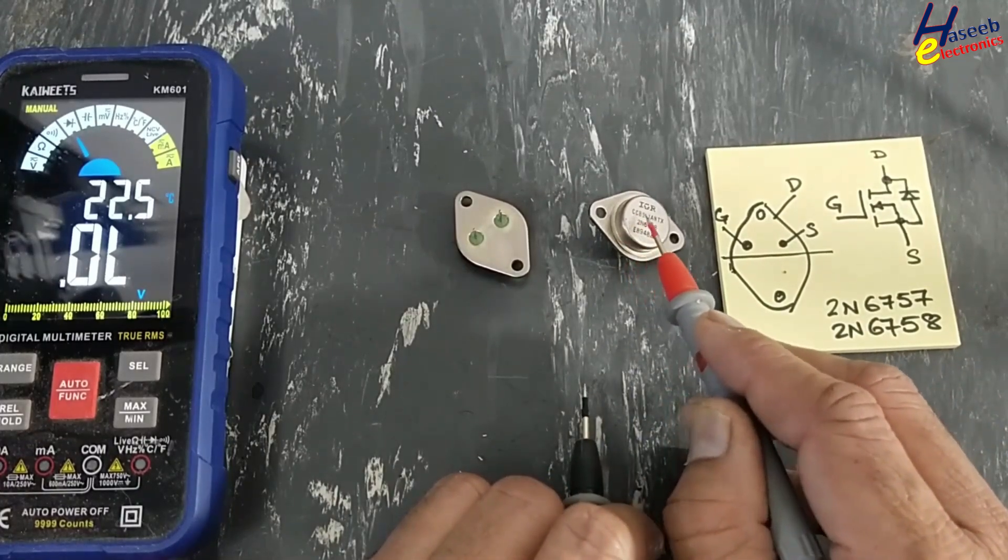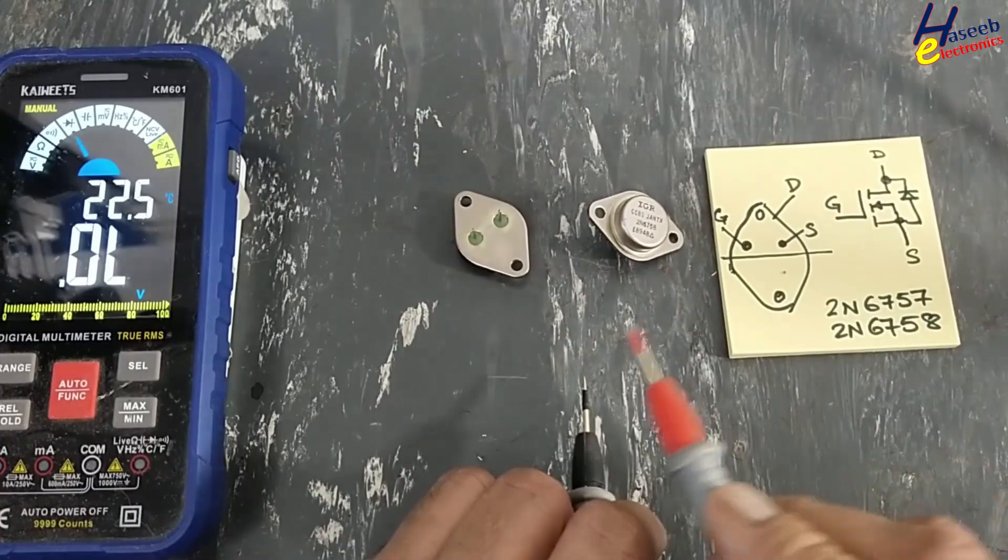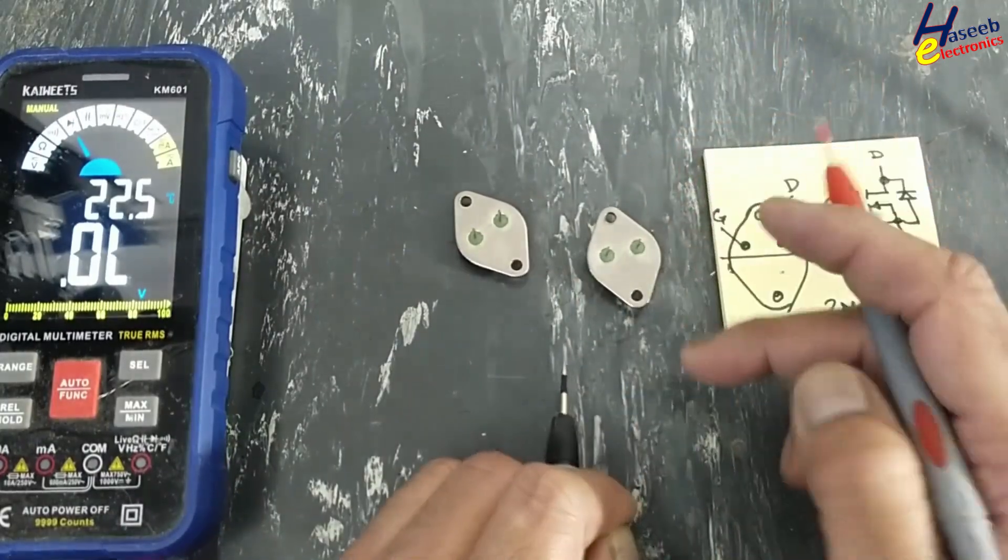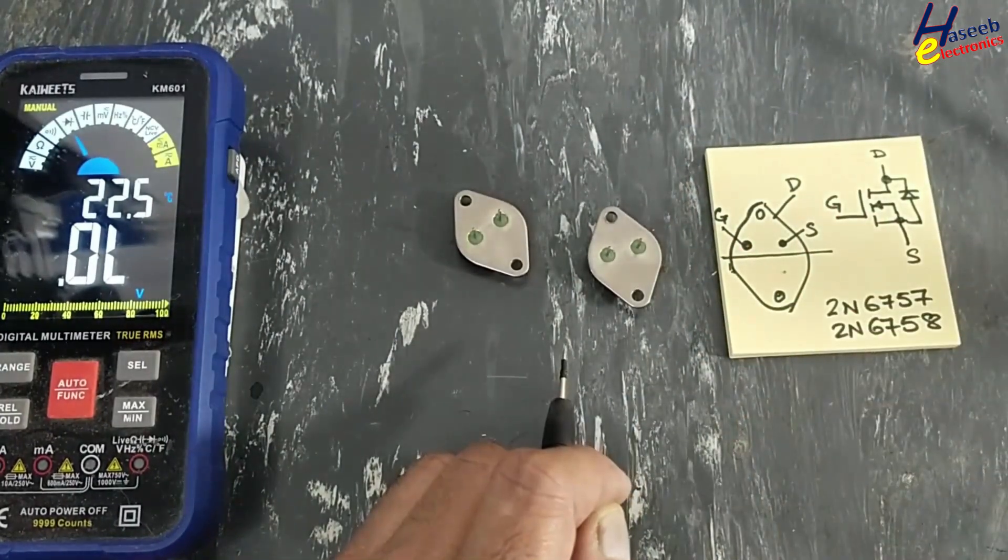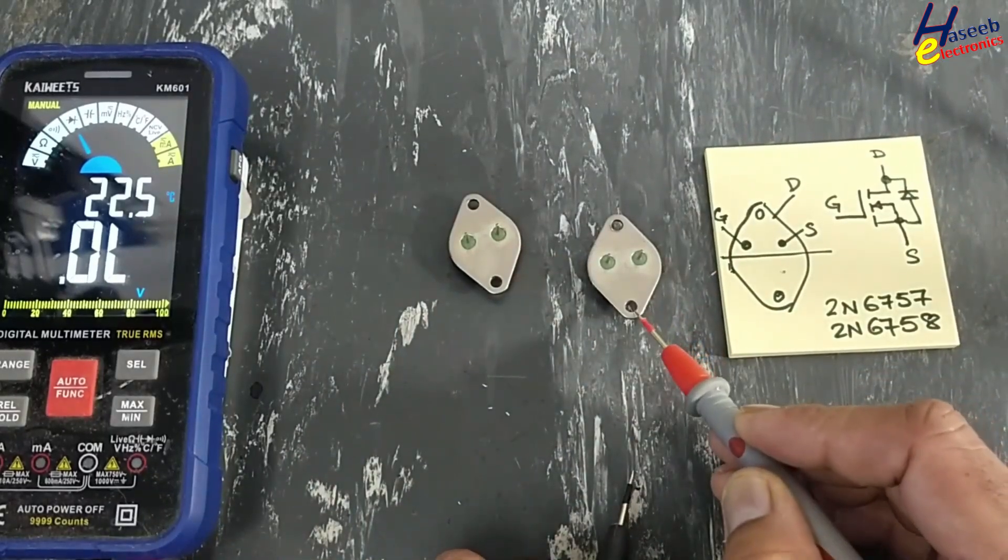The 2N6758 is for 200 volt, the 2N6757 is 150 volt. Both use TO3 or TO204AA package. If you see the bottom view, you'll notice the mounting holes.